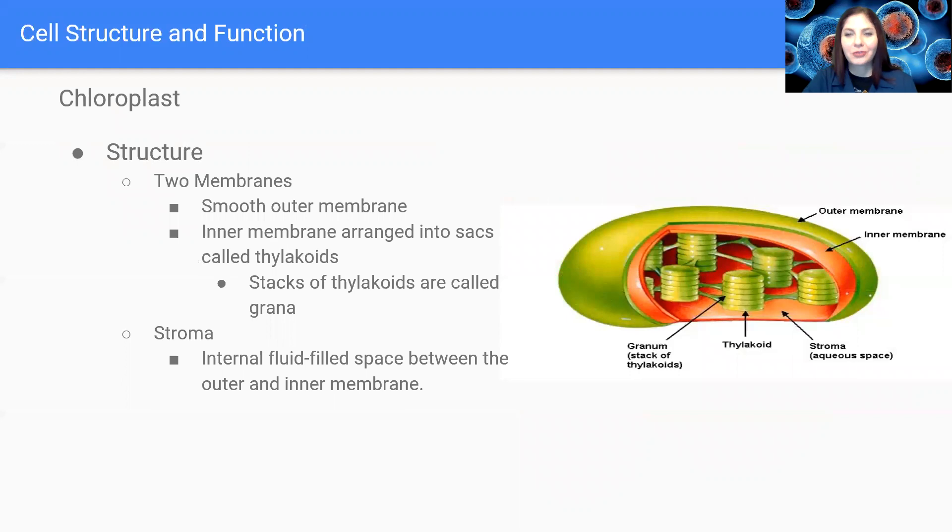So next up is our chloroplast. Now similar to the mitochondria, it is composed of two membranes. We again have a smooth outer membrane, and then the inner membrane is actually arranged into stacks that are called thylakoids. The stacks of the thylakoids are called grana. And then we have stroma, which is the internal fluid filled space between the outer and the inner membrane. And if I wanted to cut one of these little guys open, the space inside those thylakoids is called the lumen.